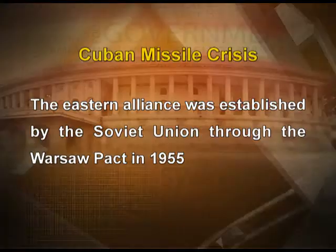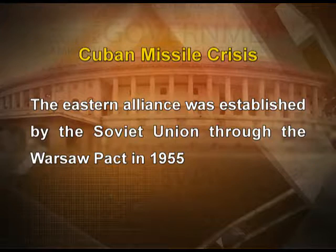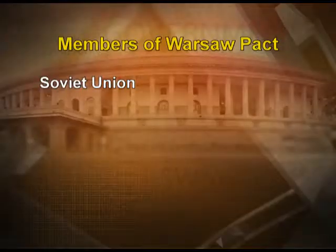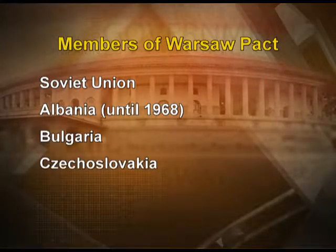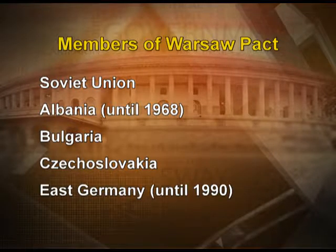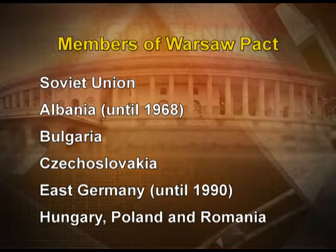On the other hand, the Eastern alliance was established by the Soviet Union through the Warsaw Pact, signed in 1955. Its main aim was to counter NATO's forces in the western part of Europe. It was a political and military alliance between the Soviet Union and Eastern European countries. The members of the Warsaw Pact were the Soviet Union, Albania, Bulgaria, Czechoslovakia, East Germany, Hungary, Poland, and Romania.